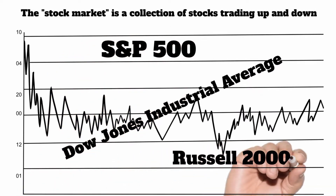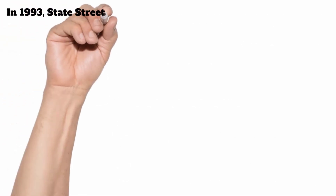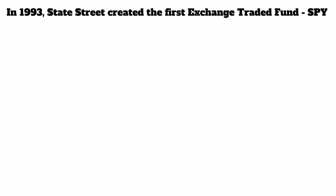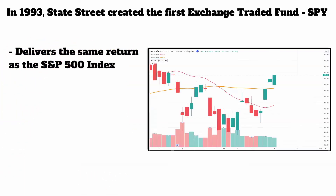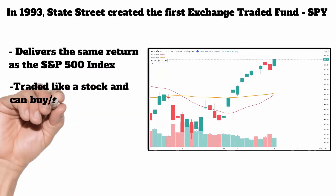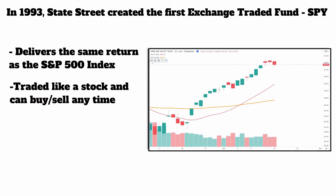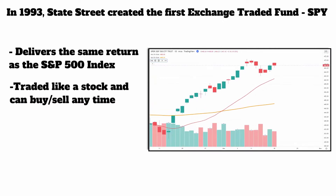They created these indexes as a way for someone to look at a number and say the market went up today or the market went down today — but it was just a collection of those 500 stocks. In 1993, a firm called State Street created the first exchange traded fund called the SPY. This was developed to deliver the same return as the S&P 500 index. The great thing about it was it was a stock — not a mutual fund, not indexed — it could be directly bought and sold like a stock at any time at a really cheap price.